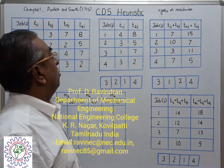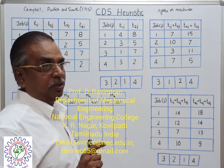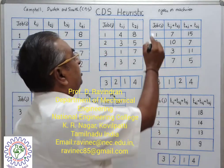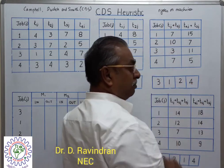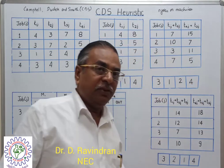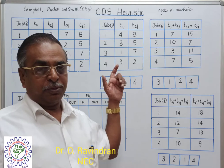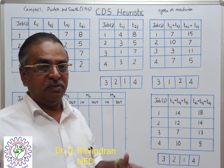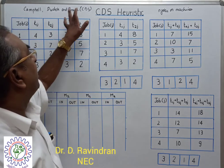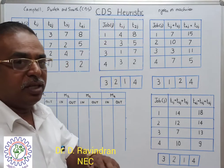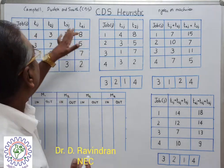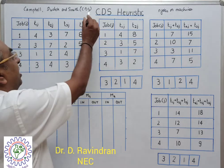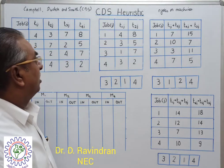Welcome. We are going to see the CDS heuristic which can be applied for N jobs M machines problem. Even if the conditions of N jobs 3 machines problems explained in the earlier lecture are not satisfied, this heuristic can be applied. Heuristic means it is a rule of thumb. Three scientists Campbell, Dudek, and Smith — with their names, the heuristic is named the CDS algorithm.